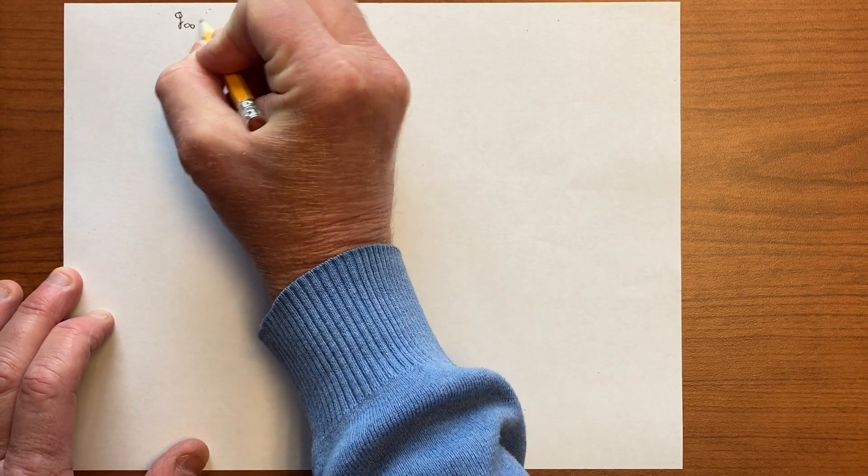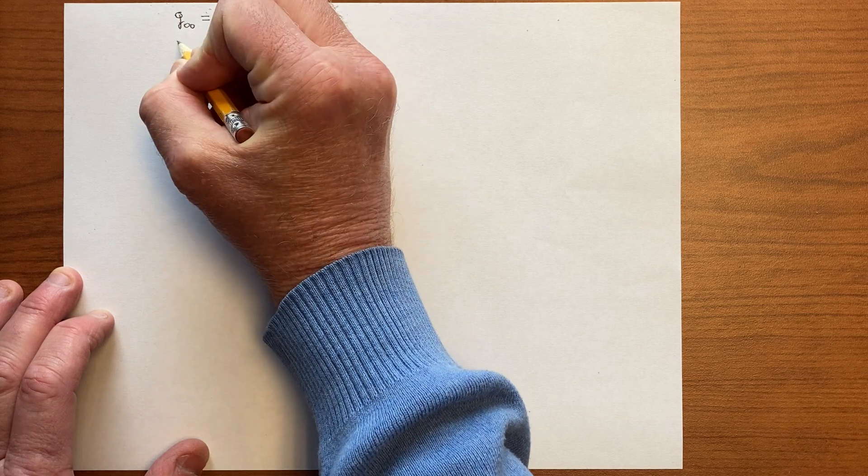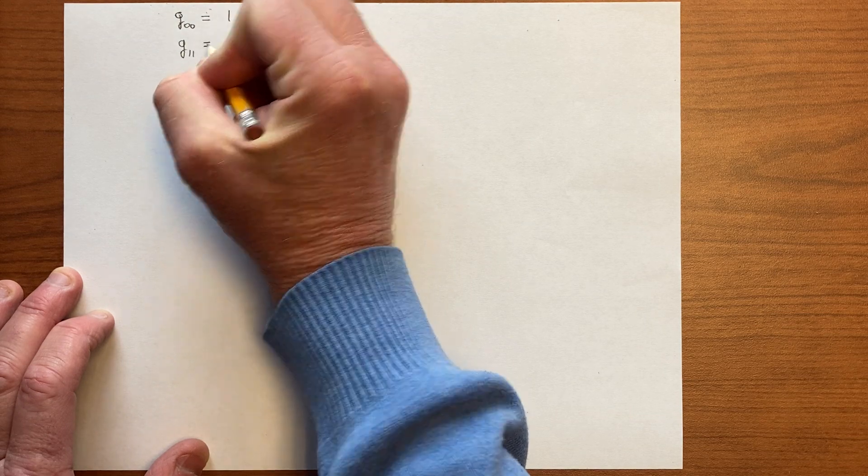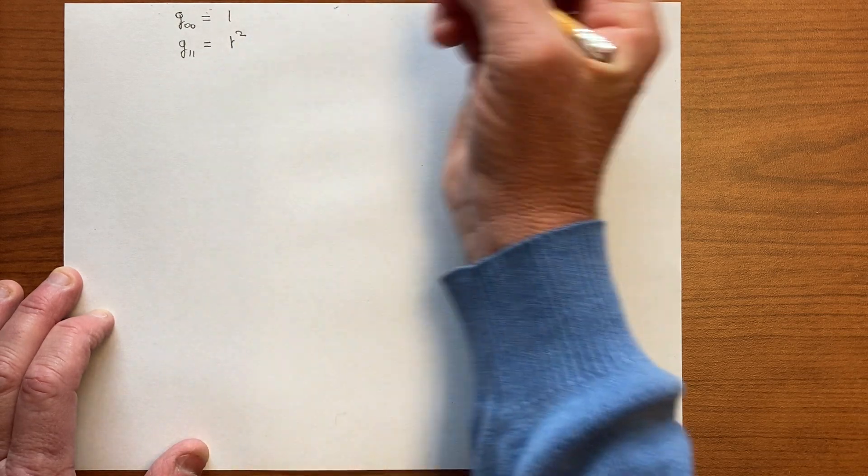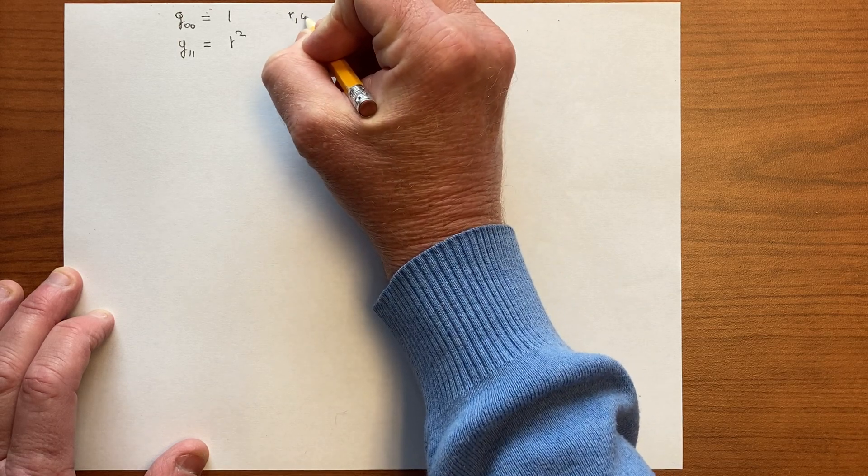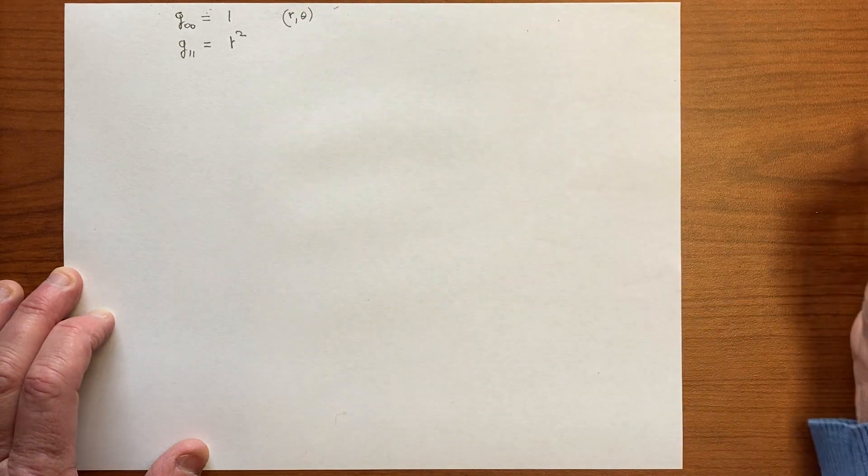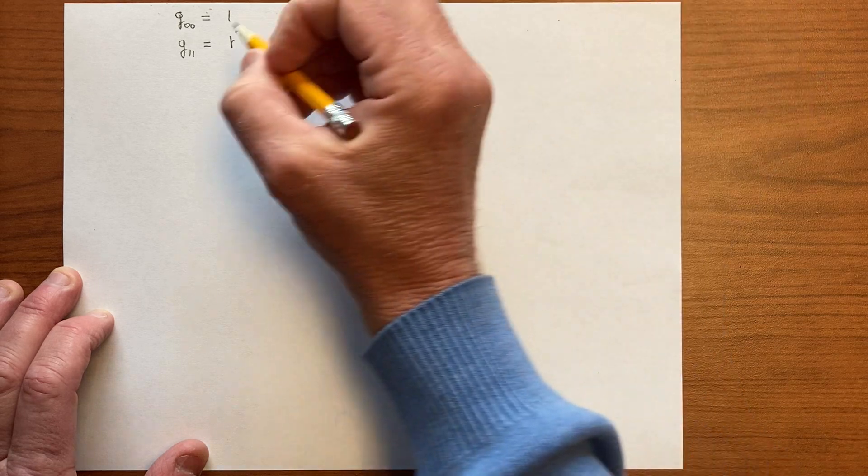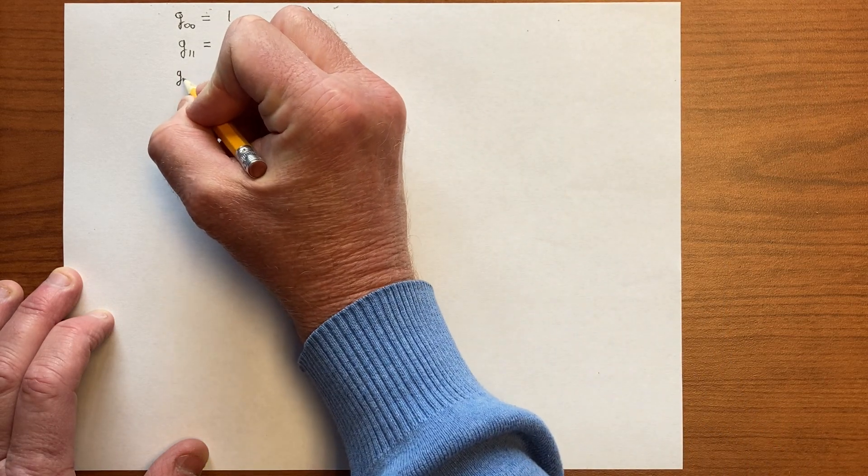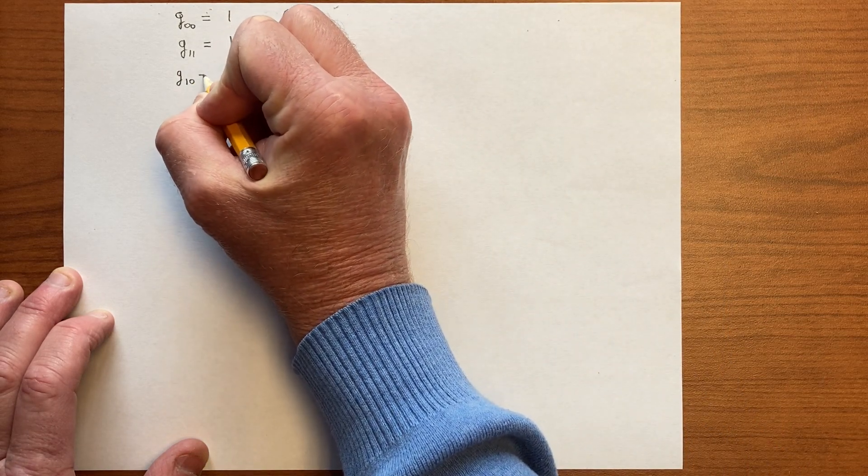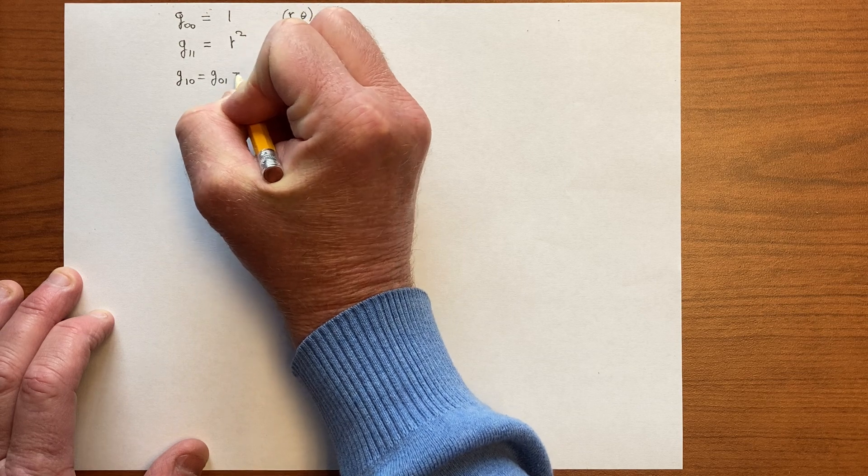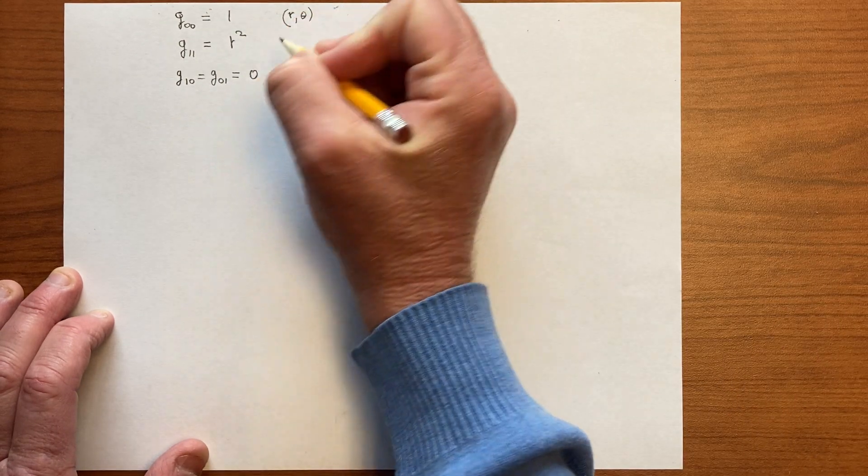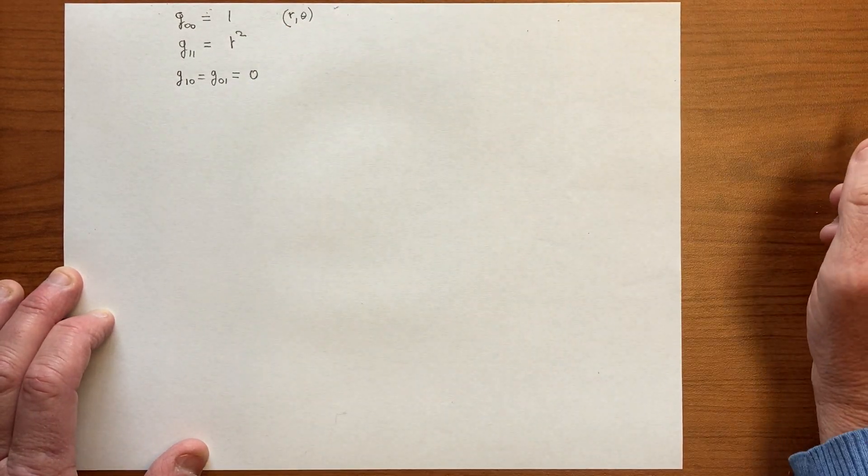Let's use these metric terms for our theta coordinates, where g_10 equals g_01 equals 0, so the off-diagonal terms are 0.